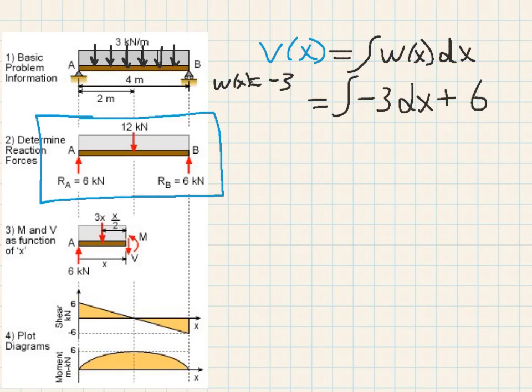This 6 comes in because from the point 0, I should say, or at this location, which is the 0 location, I have a shear of 6 kilonewtons. And that's where the 6 comes in.